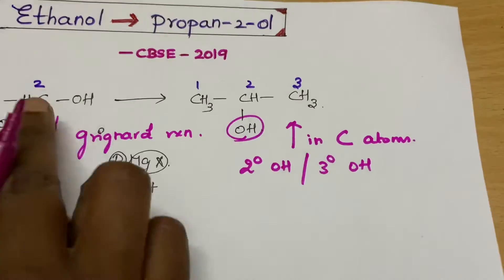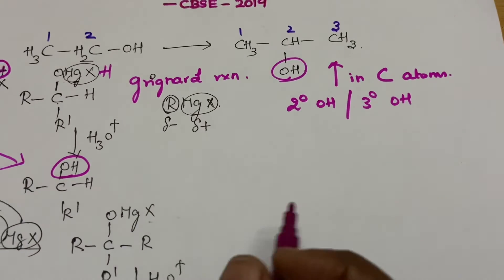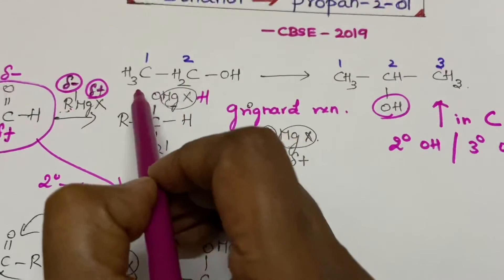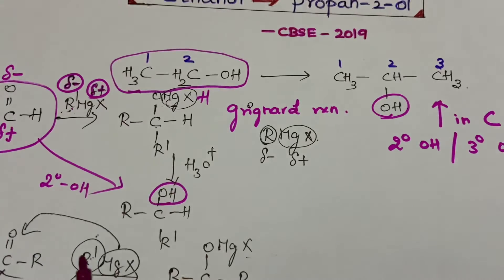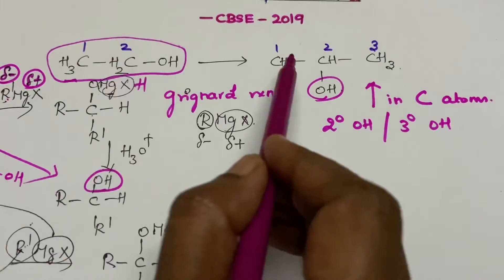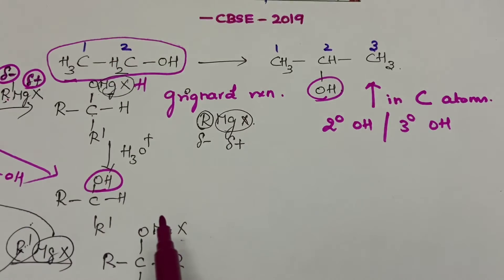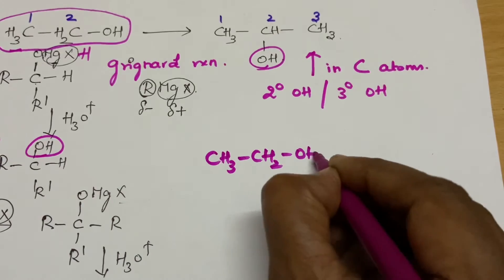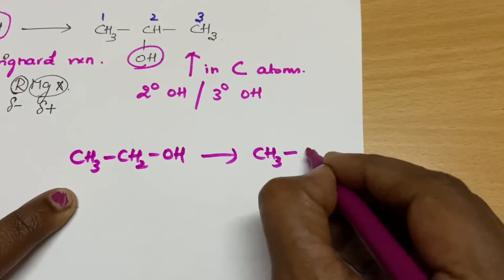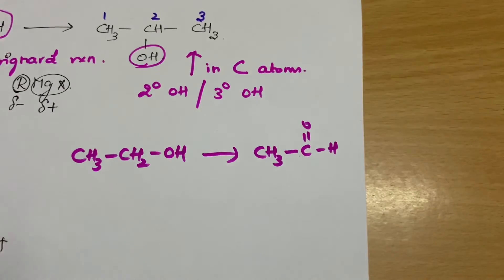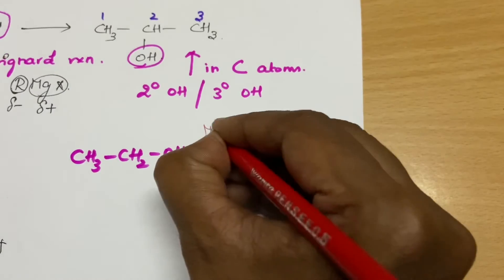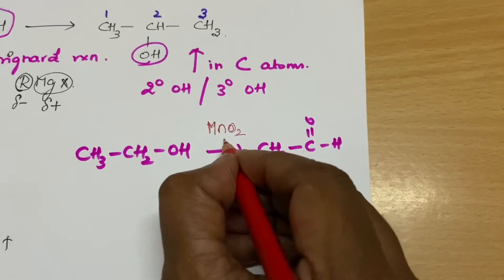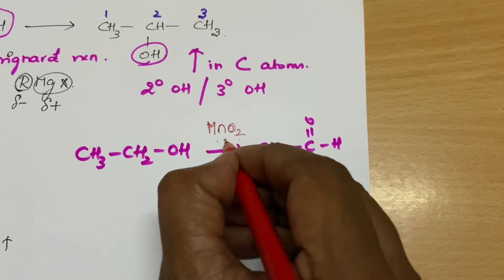Here there is an increase in carbon atoms from the starting material, and the product is a secondary alcohol. So the starting compound for the Grignard step must be an aldehyde. But ethanol is an alcohol, so one more step is involved. First, you convert this alcohol to the corresponding aldehyde. To do this, you use a mild oxidizing reagent.